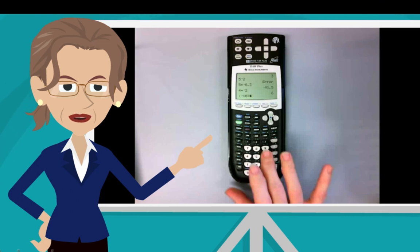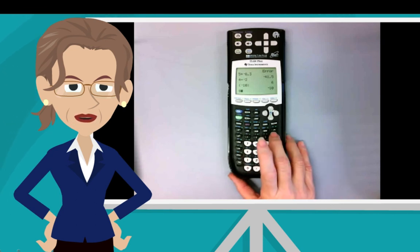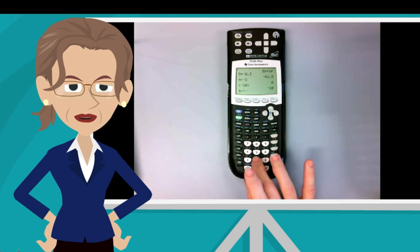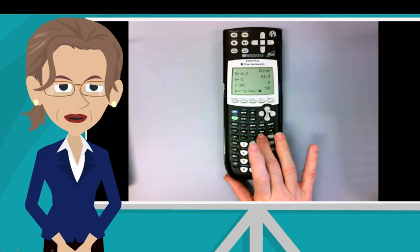And then the calculator will know that it should add the numbers in the denominator before it divides. So here's what we enter. 8 divided by, open parenthesis, now a minus 2.3 plus 6.3. Now close your parentheses.